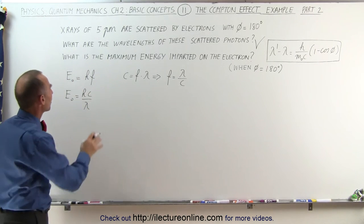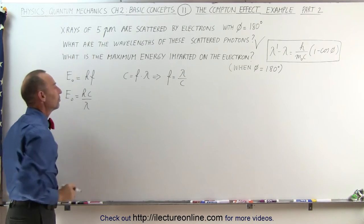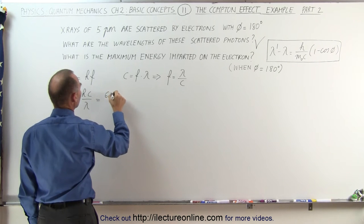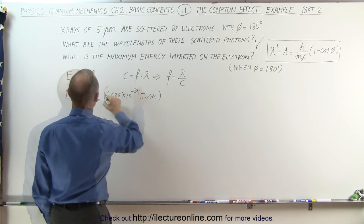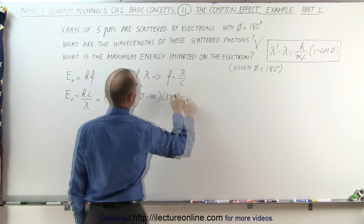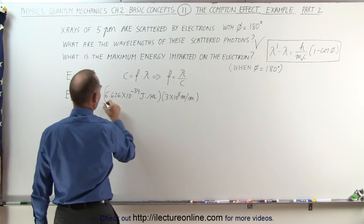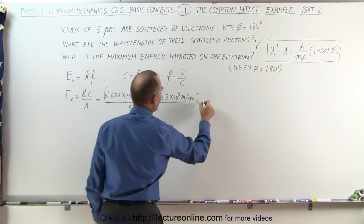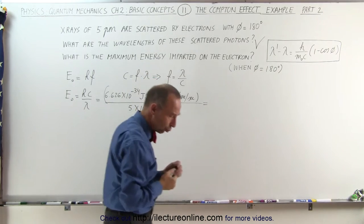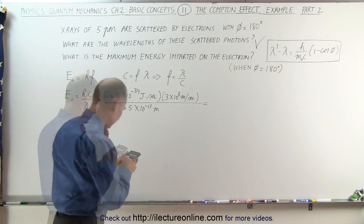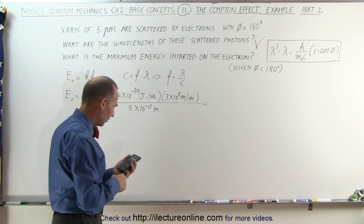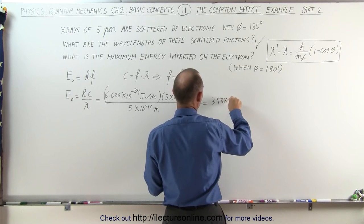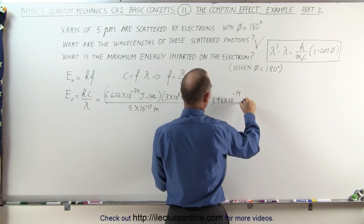I like that better because we were given the wavelength not the frequency of the electrons. So plug in what we know: that would be equal to Planck's constant times the speed of light divided by the wavelength 5 picometers, which is 5 times 10 to the minus 12 meters, and that will give us the energy in joules. The energy would be 3.98 times 10 to the minus 14 joules.